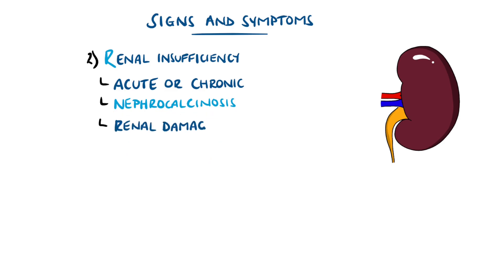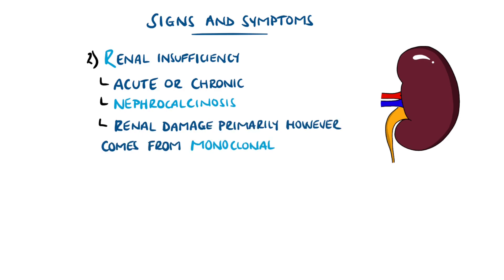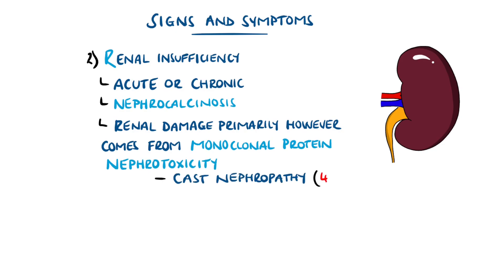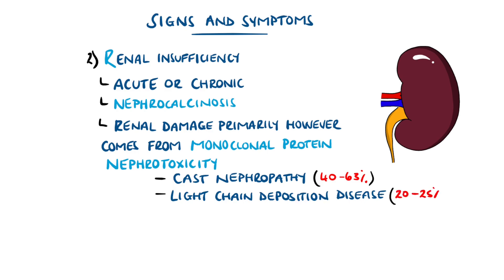The most common cause for renal insufficiency, however, is due to the monoclonal proteins being produced by the myeloma cells, leading to conditions such as cast nephropathy or light chain deposition disease. As a result of renal injury, electrolyte imbalances can then develop.